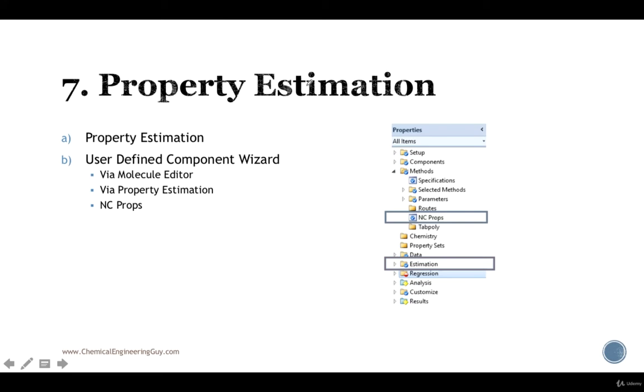Then we get to property estimation. As the name implies, we're going to be estimating properties which are not present in Aspen Plus. This is mostly convenient for non-conventional substances or substances which are not present in Aspen databases. We can use either the molecule editor, we can use it via property estimation of Aspen using Unifac mostly, or we can state plenty of methods that Aspen has already for modeling non-existing materials.